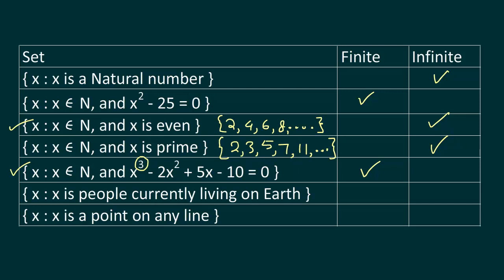x where x is a person currently living on Earth. This will also be a finite set. Now it is granted this will be a very large number, it will go into billions, but still it is a finite number. So this will be a finite set.